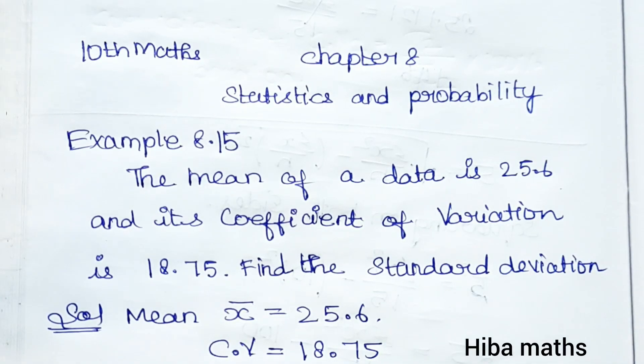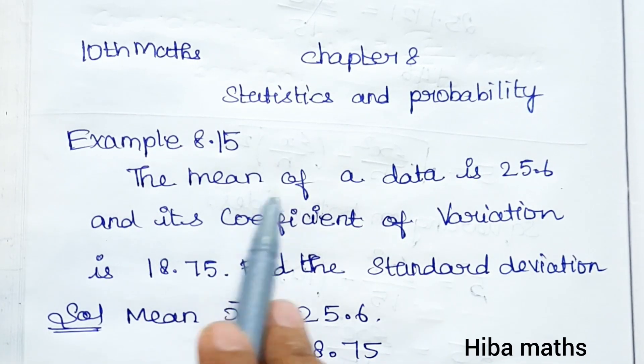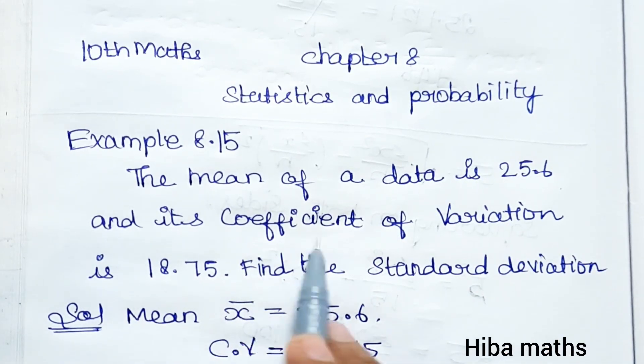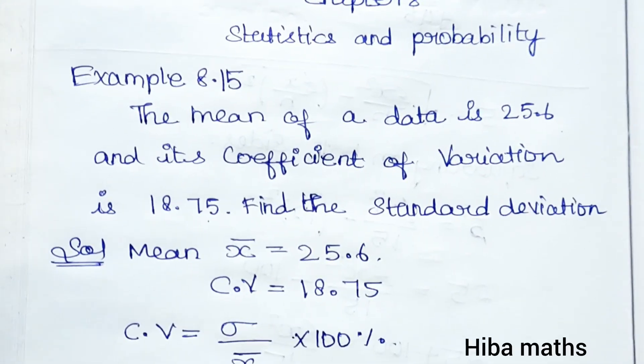Example 8.15. The mean of a data is 25.6 and its coefficient of variation is 18.75. Find the standard deviation.